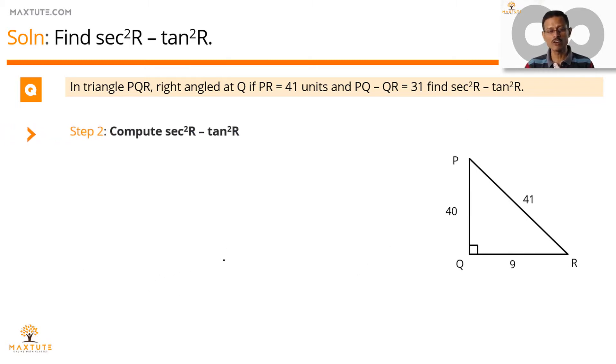Step 2. Let's find out the value of secant R and then tan R and then compute the value of this expression. Secant R is 1 by cos R. Therefore, it's equal to hypotenuse by adjacent side. Side adjacent to angle R.